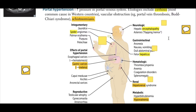Another neurologic condition is asterixis, or flapping tremors. When you ask the patient to extend their arms and hold their hands upward and backward, they will continuously display a flapping motion — the hands moving forward and backward. This is known as flapping tremors.